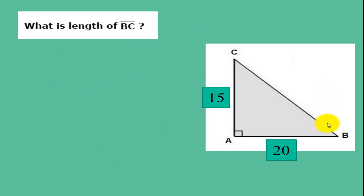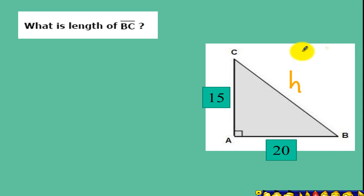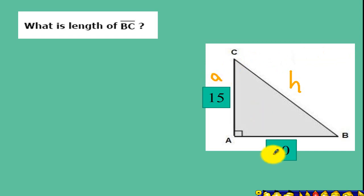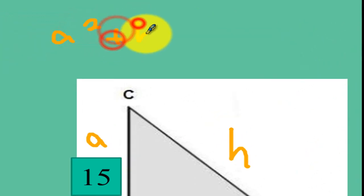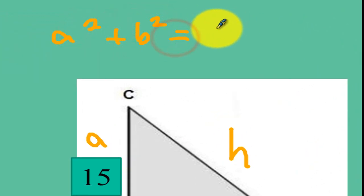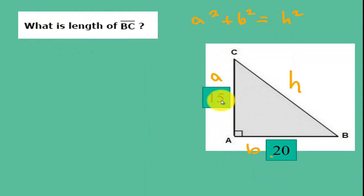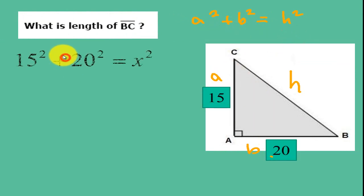So here is an example. What is the length of our side BC? Now remember, BC is your hypotenuse. So let me label this as H. Now we have legs 15 and 20. Label 15 as our A and 20 as our B. And then using our formula, we will have A squared plus B squared equal to your hypotenuse squared. Plug in your 15 to A, 20 to B.